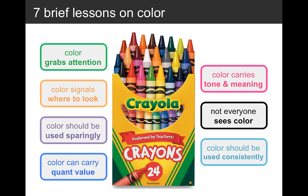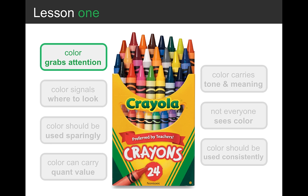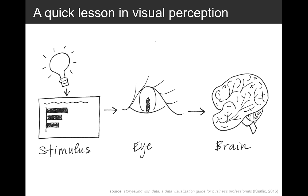Today I'm going to talk through seven brief lessons on color. I'll start by talking about how attention-grabbing color can be and how we can use that power to signal to our audience where to look. But to work as a signal, color has to be used sparingly. Color can carry quantitative value, and it can also carry tone and meaning — but not everybody sees color the same way. Finally, we'll talk about how color can and should be used consistently.